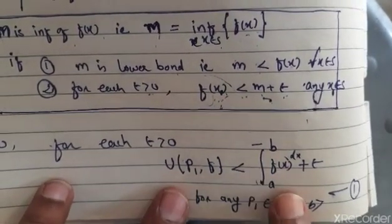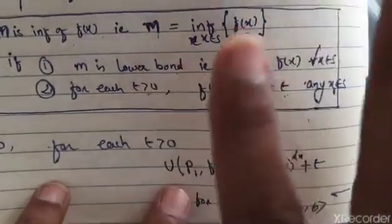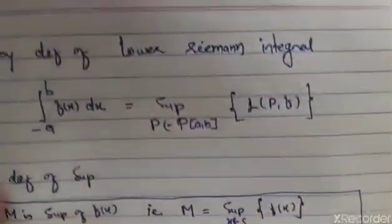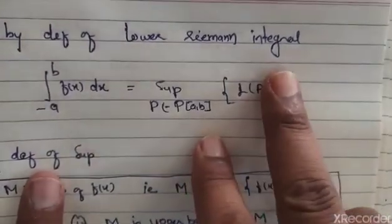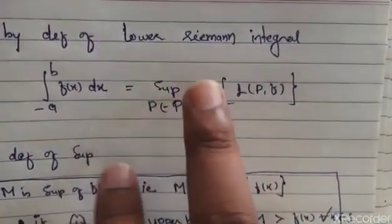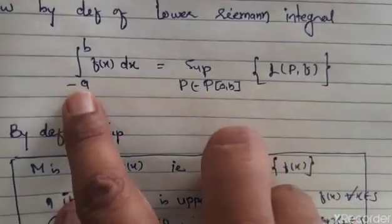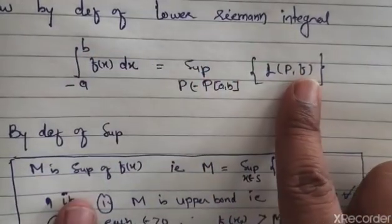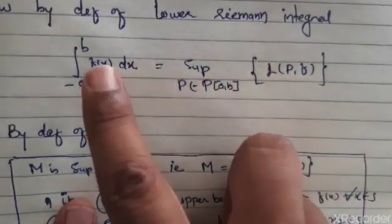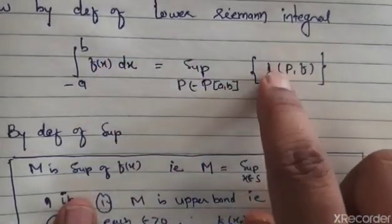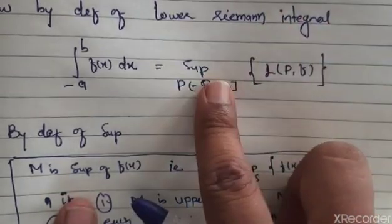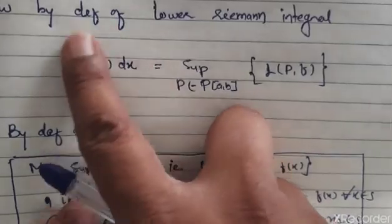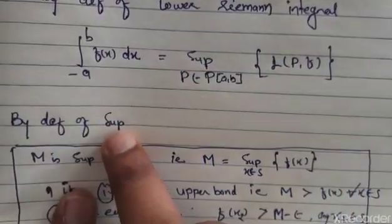So U(P1, f) is less than the integral from a to b of f(x)dx by this definition. Now let's move to the second condition. The second one involves the lower Riemann integral and L(P, f). By the definition of supremum: if M equals the supremum of f(x), we use the analogous supremum property.